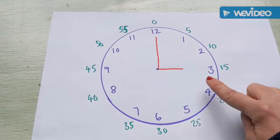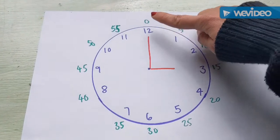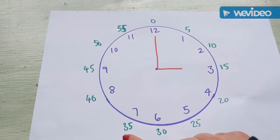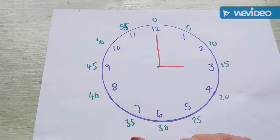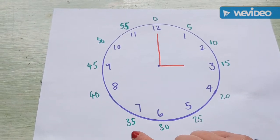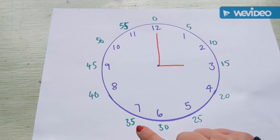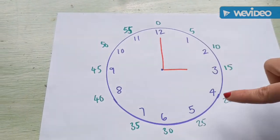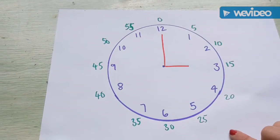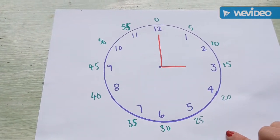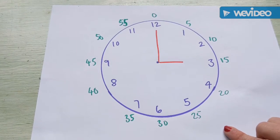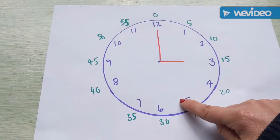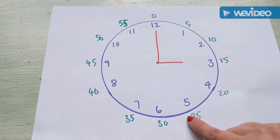Not all clocks have these numbers that I've written around the edge, but it can be really helpful to have them written on. You might want to make your own clock face and write on these numbers if you find that helpful. The numbers around the edge are the minutes - so the inner numbers are the hours and these outer numbers are the minutes.